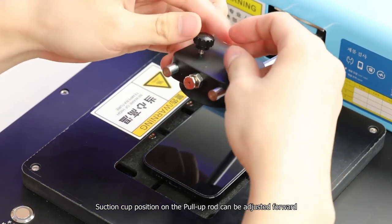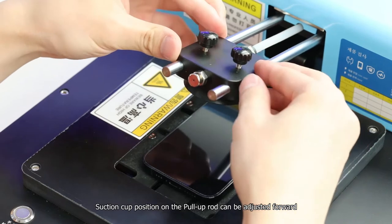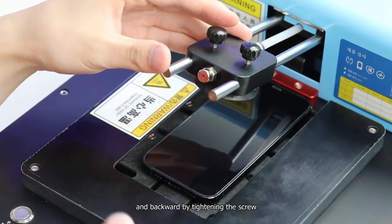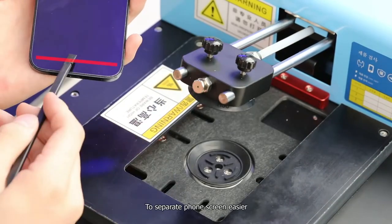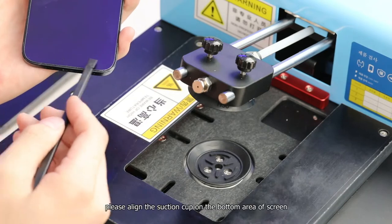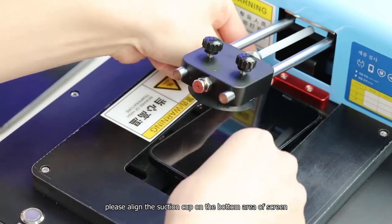Suction cup position on the pull-up rod can be adjusted forward and backward by tightening the screw. To separate the phone screen easier, please align the suction cup on the bottom area of the screen.